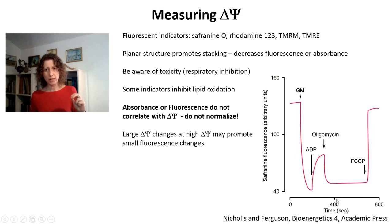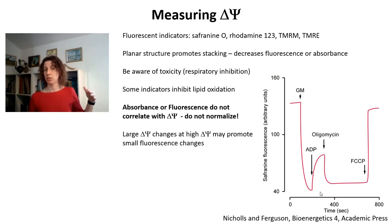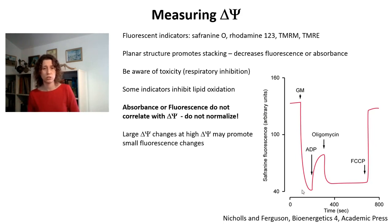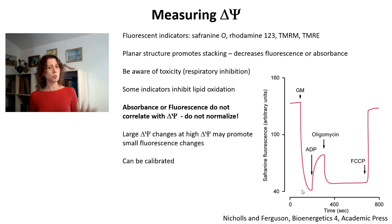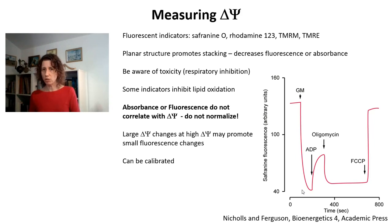At high membrane potentials — which correspond to low fluorescences — small changes in fluorescence can represent large changes in membrane potential, just because of the nature of the Nernst equation. So you may underestimate changes happening in the physiological range of high membrane potentials because they result in small changes in fluorescence. All of this really tells you that membrane potential measurements without calibration may not be a good idea, because you don't know how much of a change in membrane potential you have just from measuring fluorescence changes. The advantage of isolated mitochondria or permeabilized cell systems is that calibration is not only possible — it's actually reasonably simple.